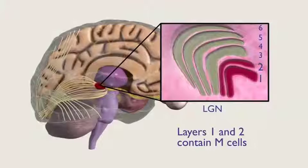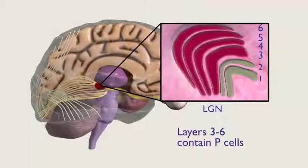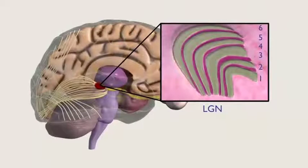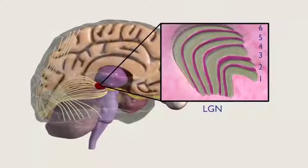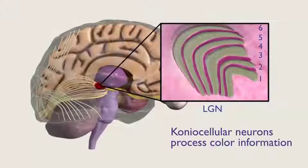Layers 1 and 2 contain magnocellular, or M-cells, which are sensitive to movement but not color or detail. Layers 3 to 6 contain parvocellular, or P-cells, which are sensitive to color and detail but not movement. A third set of neurons, located ventrally to the M-cell and P-cell layers, known as coniocellular neurons, are involved in processing color information.